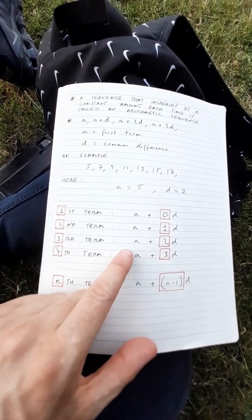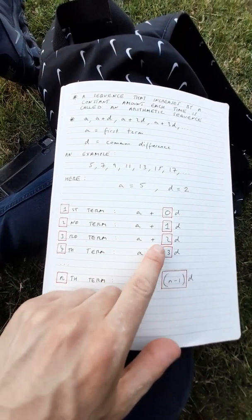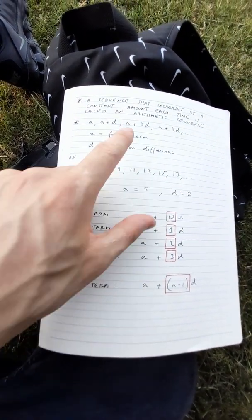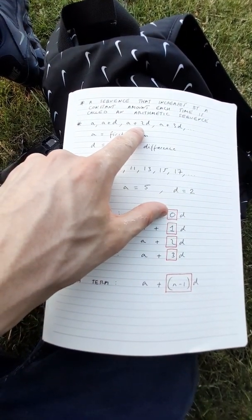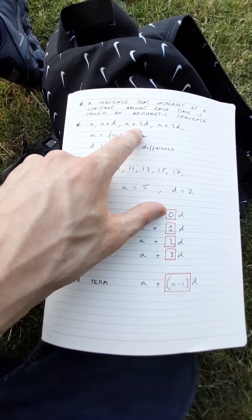Now the third term is a plus 2d and 2 is 1 less than 3. And as we can see over here we have a plus 2d which is the third term.